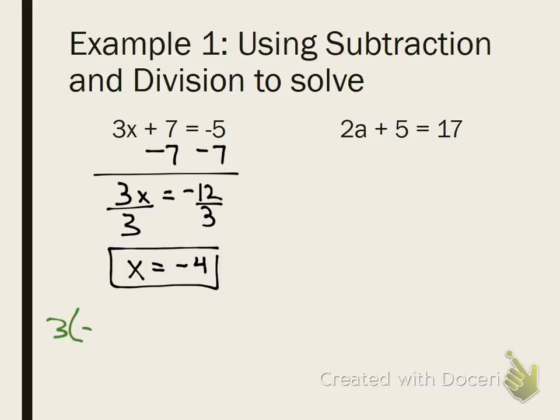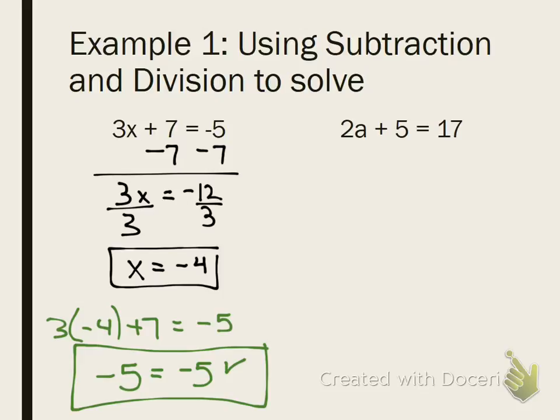So we have 3 times negative 4 plus 7 equals negative 5. In your calculators or even mental math, what is 3 times negative 4? What's negative 12 plus 7? So on your checking, I need to see two steps. I need to see the substitution and the boxed checked answer. Negative 5 equals negative 5. Simplify both sides all the way and show me that they equal out. The answer is negative 4. Now, I want you to do the second problem the exact same way.